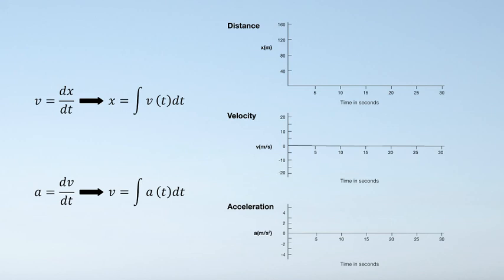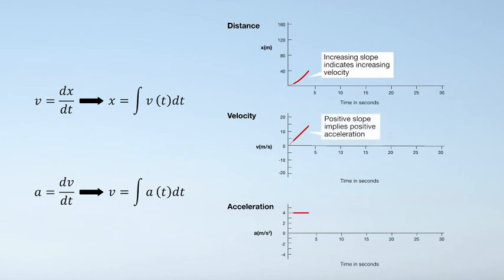Let's draw the first four seconds of each graph. The displacement initially has an increasing slope. This means that the velocity must increase, which is illustrated by the positive slope here. The positive slope for velocity means that not only is the acceleration constant, but it is also positive.